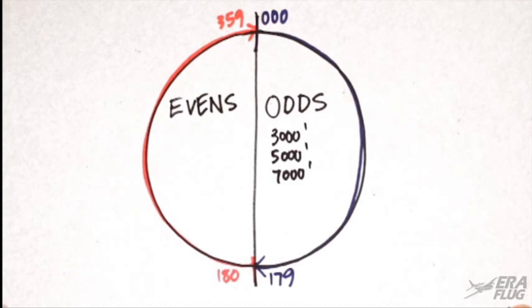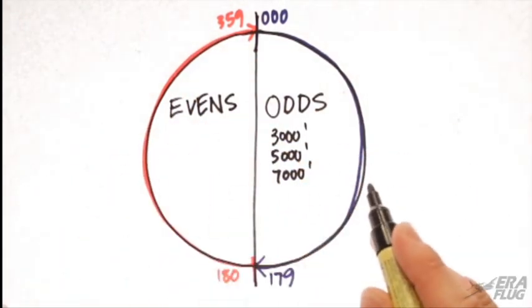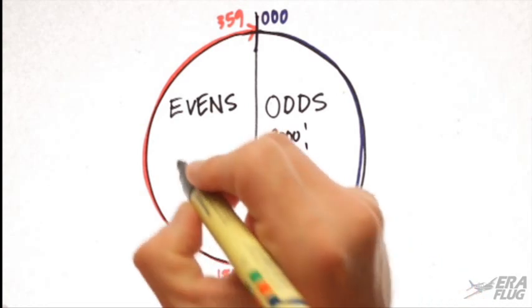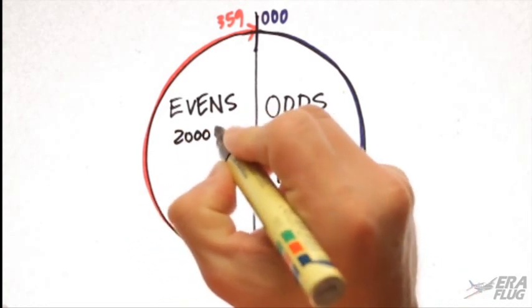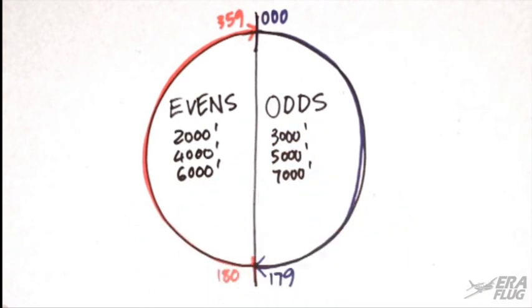Whereas those traveling in an approximate westerly direction will fall into the sector beginning with even numbers. So their altitudes will be, for example, 2,000 feet, 4,000 feet, 6,000 feet.